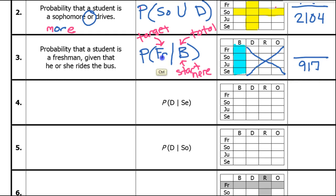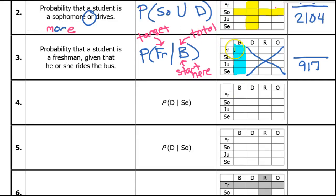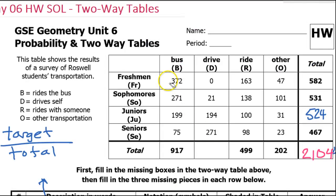The target is going to be freshmen. But I already crossed out all the other columns — I'm only dealing with the given. So it's a matter of what part of the B column is freshmen, and that's going to be this one block right here. That's the freshmen who didn't get crossed out. So the target is 372, giving us 372 over 917.